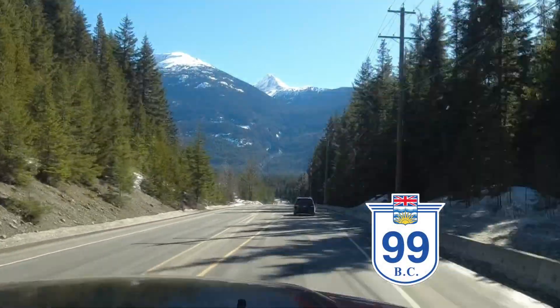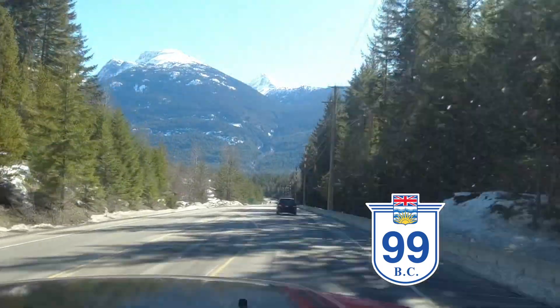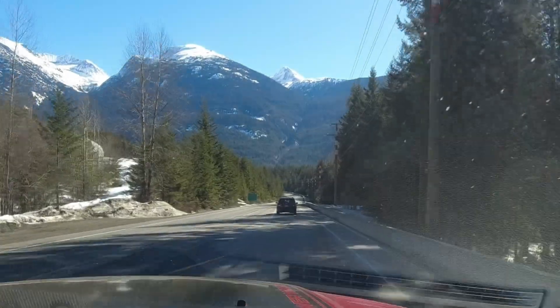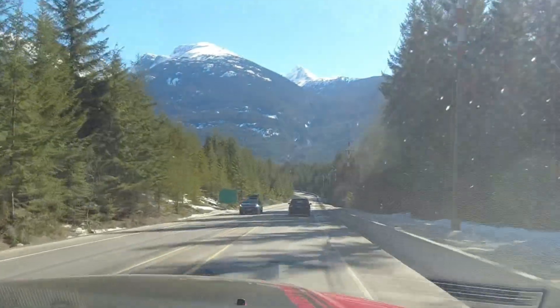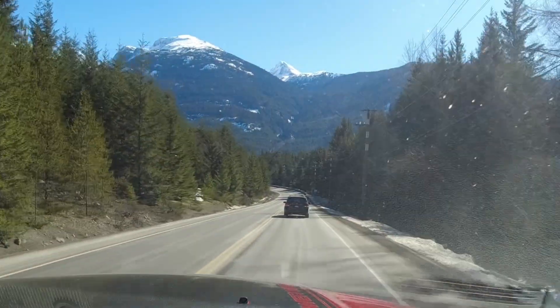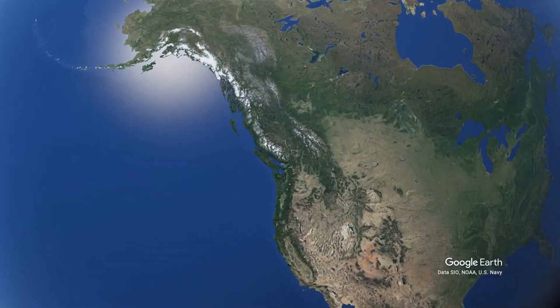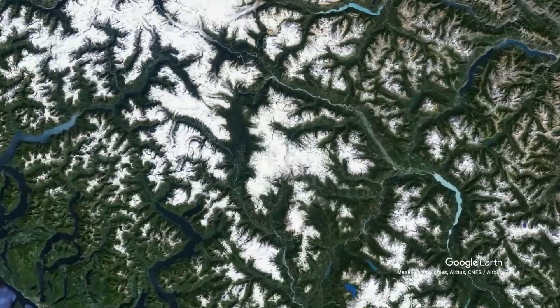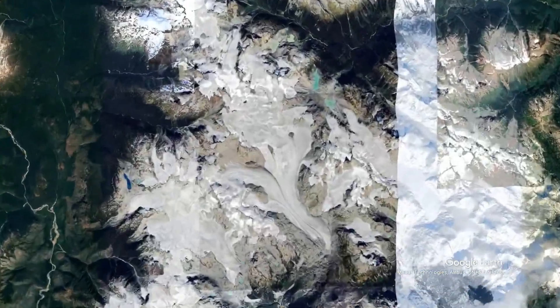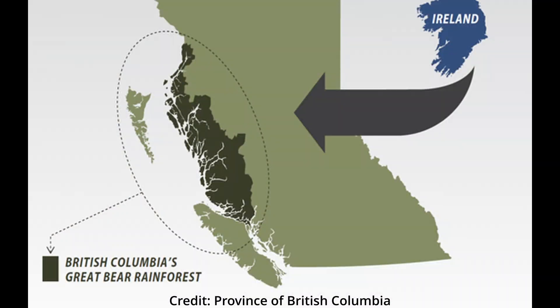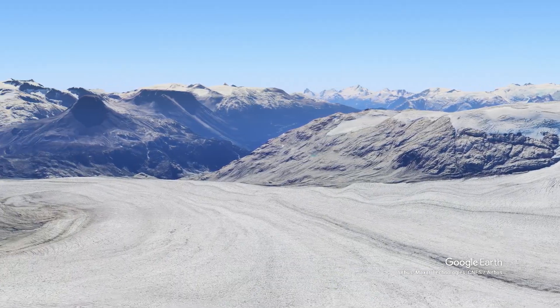Welcome back to the channel — this is the second video on the Garibaldi Volcanic Belt and Pemberton Ice Field. We're driving parallel with the Pemberton Ice Field right now. If you look at the tops of those mountains, you'll see piles and piles of 30, 40, 50, 60 feet of snow — those are the glaciers.